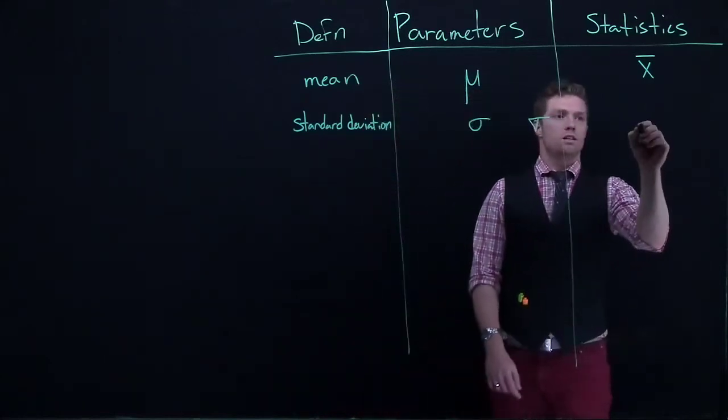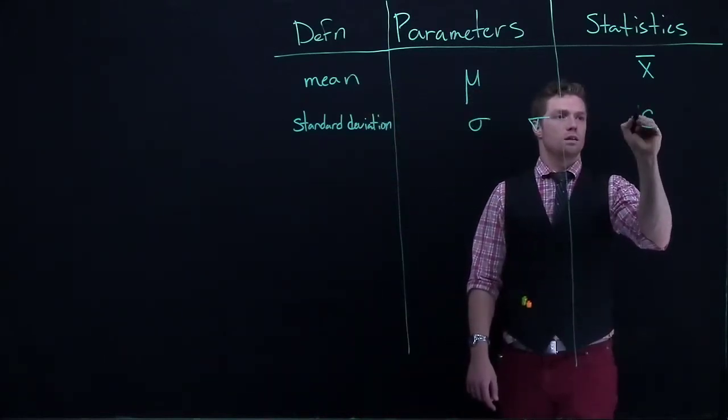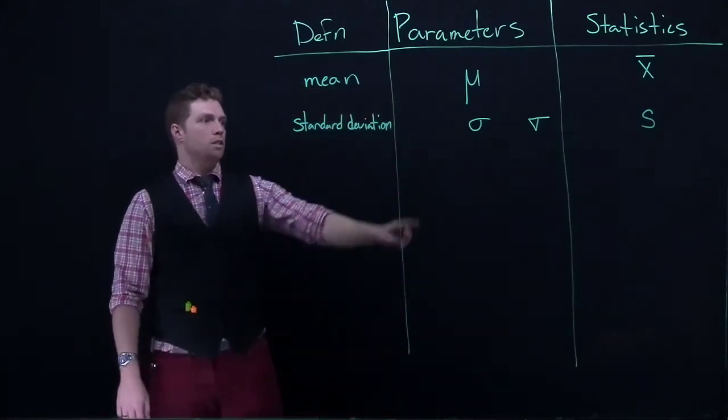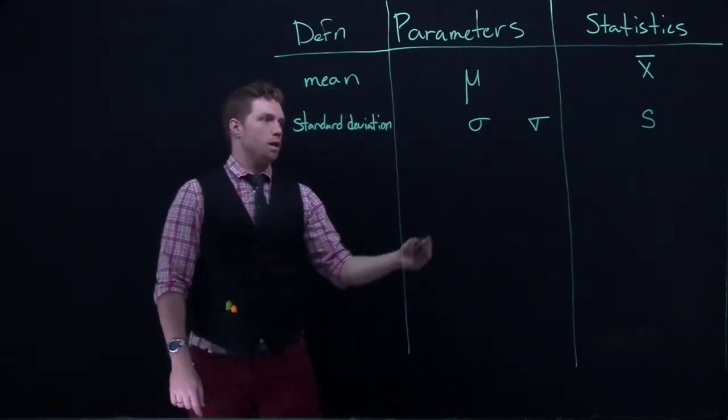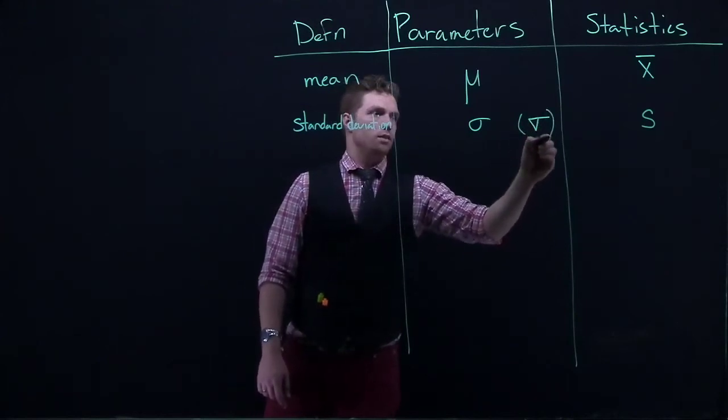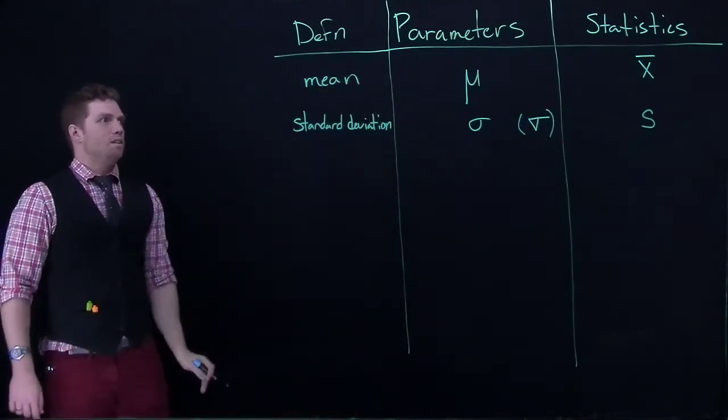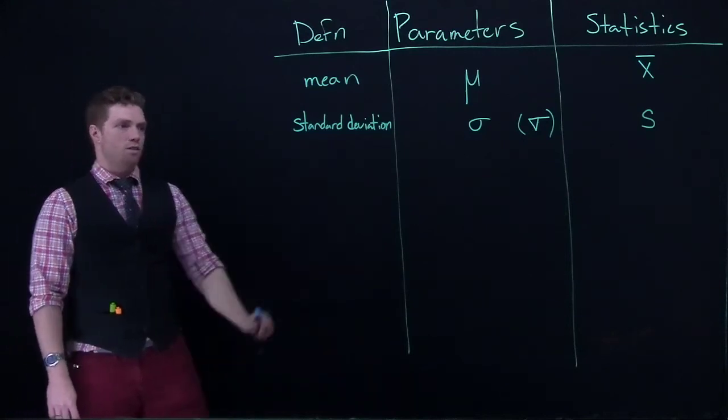And in our statistics, it's just the character S. So standard deviation of the population is going to be looking like sigma, or you will often see me write it kind of like that triangular sigma. And the statistic, it's the letter S.